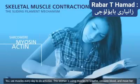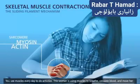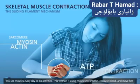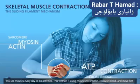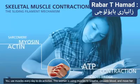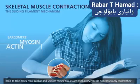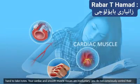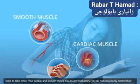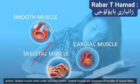You use muscles every day to do activities. This woman is using muscles to breathe, circulate blood, and move her hand to take notes. Your cardiac and smooth muscle tissues are involuntary — you do not consciously control their actions. Skeletal muscle, however, works under voluntary control.